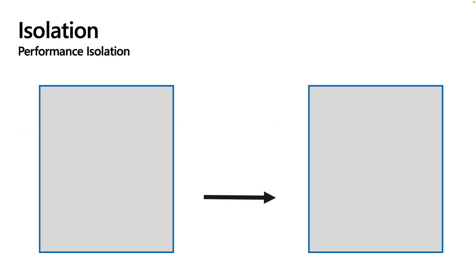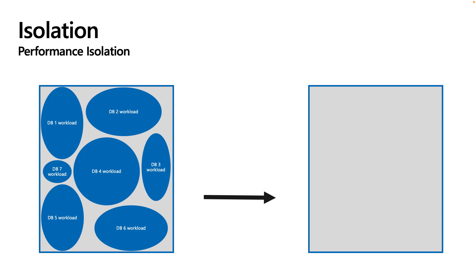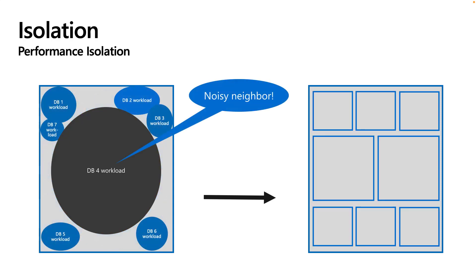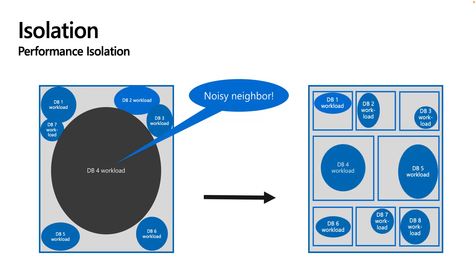Looking more closely at performance isolation, consider seven workloads running on a single database instance. The blue boxes represent the amount of system resources each workload is using. What happens when one of the workloads — in this case workload 4 — starts consuming more system resources? This is known as the noisy neighbor problem, and is a potential problem for almost all database management systems, but especially true for multi-tenant systems. One way to deal with this resource consumption skew is to implement a bounding box pattern, which limits individual workloads' consumption of resources to specific limits allotted to them.